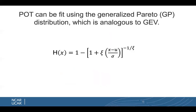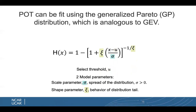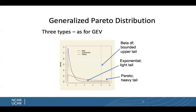The POT data can be fit using the generalized Pareto, or GP, distribution, which is analogous to the GEV. We have to select our threshold U, and we have two model parameters: the scale parameter, which gives the spread of the distribution, and the shape parameter, which gives the behavior of the distribution tail. There are also three types as for the GEV: the Pareto, which is the heavy tail; the exponential, which is the light tail; and the beta, which is the bounded upper tail.